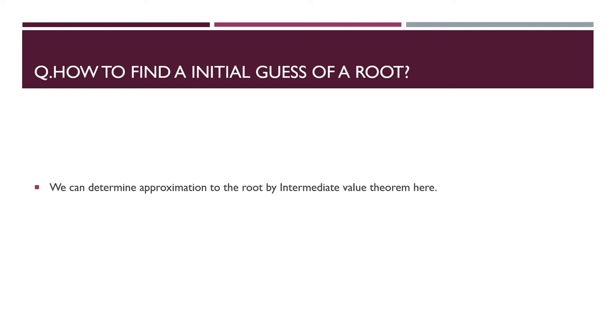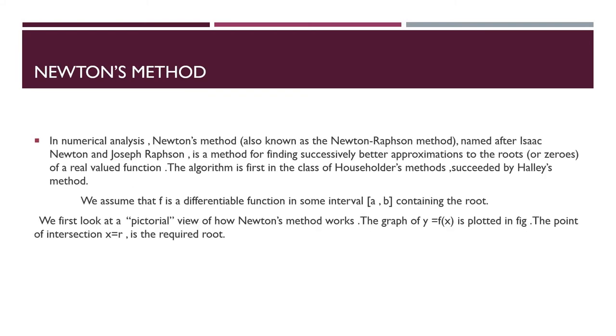Let's go to Newton's method. In numerical analysis, Newton's method, also known as Newton-Raphson method, named after Isaac Newton and Joseph Raphson, is a method for finding successively better approximations to the roots or zeros of a real-valued function. The algorithm is first in the class of Householder's methods, succeeded by Halley's method. We assume that f is a differentiable function in some interval a, b containing the root.